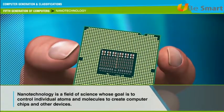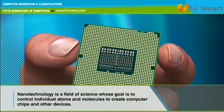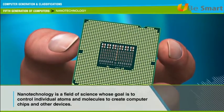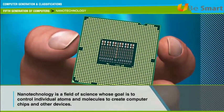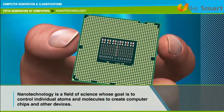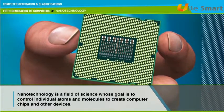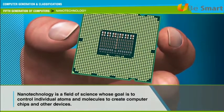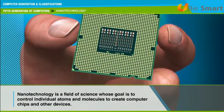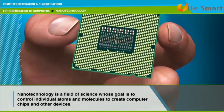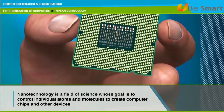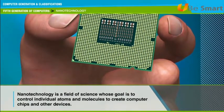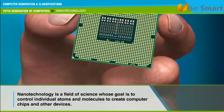Nanotechnology is the field of science that helps to create computer chips and other devices that are thousands of times smaller than current technologies by controlling individual atoms and molecules. The term nanotechnology was coined by K. Eric Drexler in 1986 in the book Engines of Creation. Current manufacturing processors use lithography to imprint circuits on semiconductor materials, and lithography has improved dramatically over the last two decades to the point where some plants can produce circuits smaller than 1 micron.